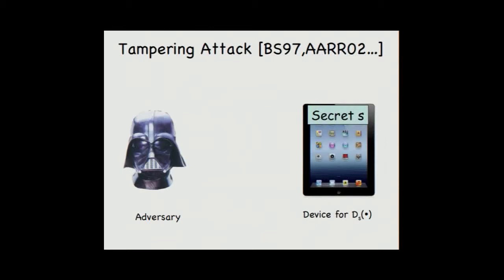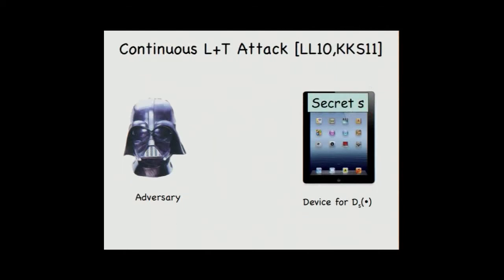In another type of attack considered by Boneh and Shamir, the adversary may tamper with the memory. We capture this by the adversary can send some function F and replace the secret S with F of S. And this can happen many times in the continual attack.